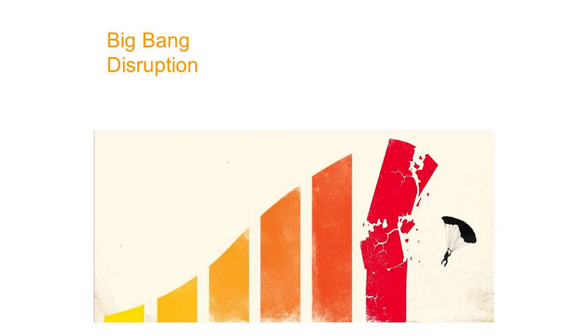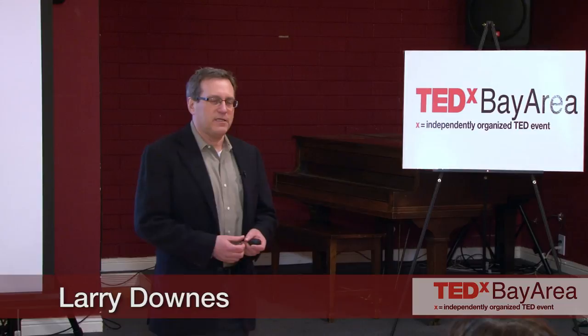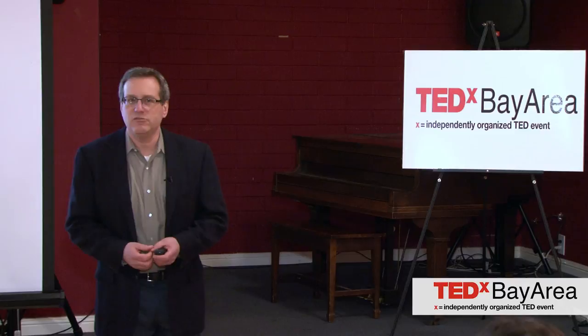My talk this evening is going to really focus on business, but I'm going to start and end with a question about art history. The question is: what does a food fight among art historians about late Renaissance painting have to do with the disruptive changes in the nature of technological innovation?